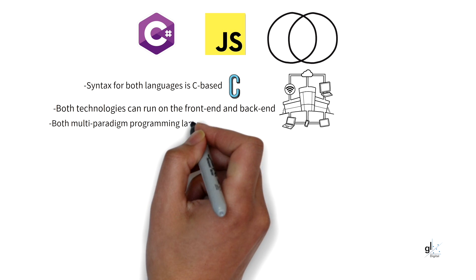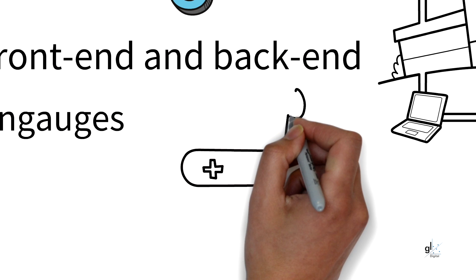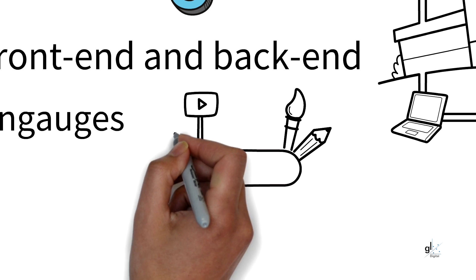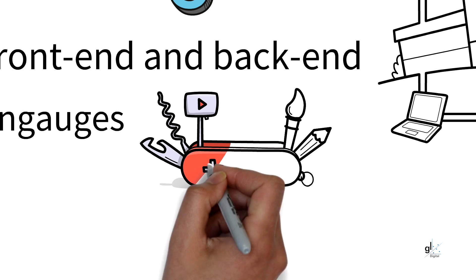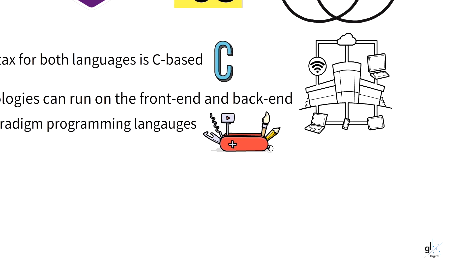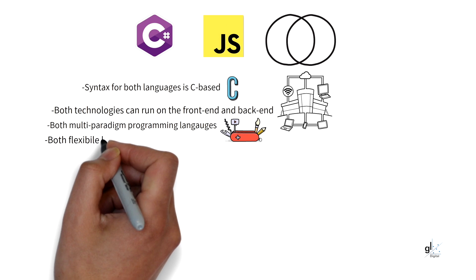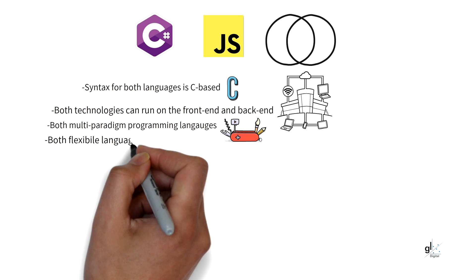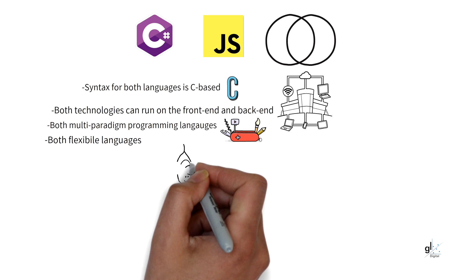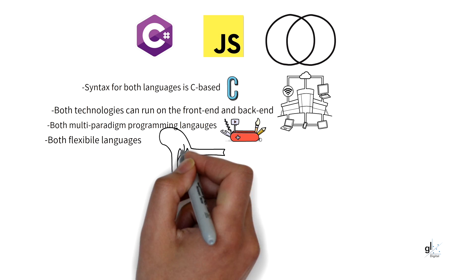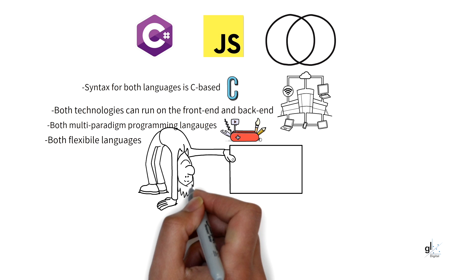C# and JavaScript are both flexible multi-paradigm programming languages that can be used for both functional programming and object-oriented programming. Both support flexibility — for example, anonymous functions can be leveraged in both C# and JavaScript. In C#, the developer can use delegates that wrap methods and instantiate the relevant methods as objects in code. JavaScript's methods can also be instantiated into objects, so in both languages methods can be passed around in code as objects.